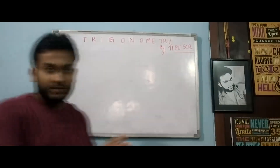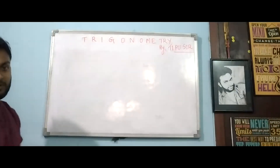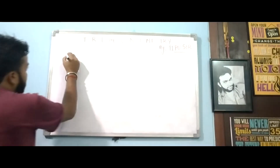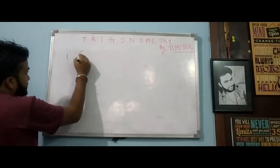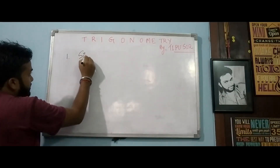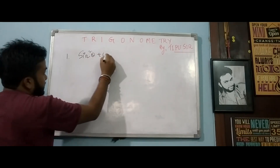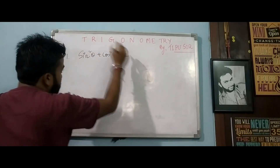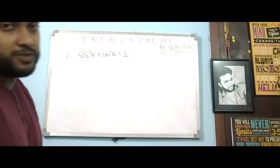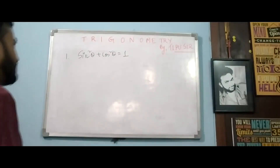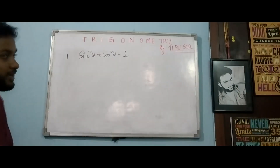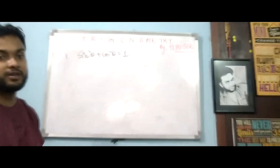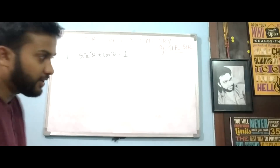The first identity of trigonometry is: number 1 — sin square theta plus cos square theta equals to 1. You all are aware of this formula? What is sin square theta plus cos square theta equals to 1?